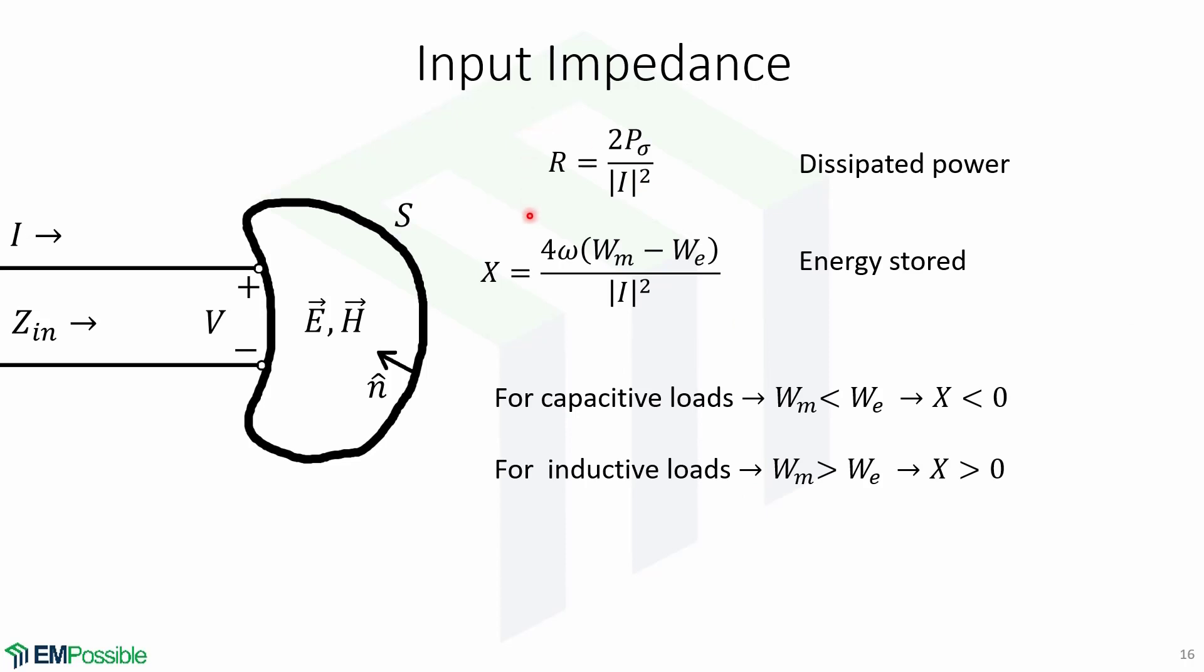And so the input impedance is equal to R plus jX which is equal to this. Now, the real part, R, is equal to the dissipated power given by 2P_sigma over I squared and X is the reactance which is the energy stored which equals 4 omega times W_m minus W_e over I squared. Notice that for capacitive loads W_m is less than W_e and thus the value of X is negative. For inductive loads W_m is greater than W_e and thus X is positive.